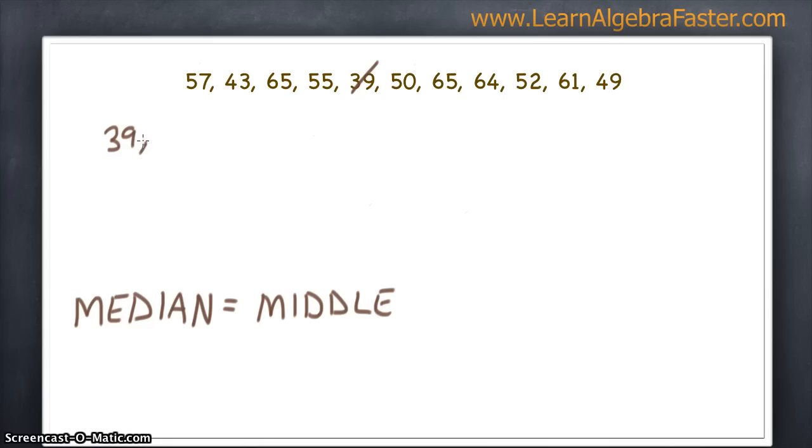Then we do not have a 40, 41, or 42. The next number is 43. Looks like it goes all the way to 49. 50 is next. 52, 55, 57, 61, 64, and we have two 65s.